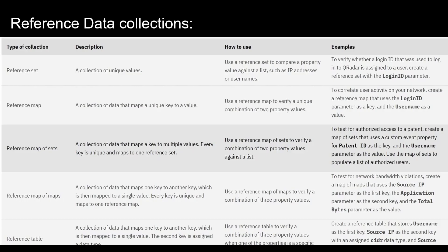In this part we are going to learn about reference data collections. Reference data collections are used to store and manage business data that you want to correlate against events and flows in your QRadar environment. We can add business data or data from external sources into our reference data collections and then use that data in our QRadar searches, filters, rule test conditions, and responses.